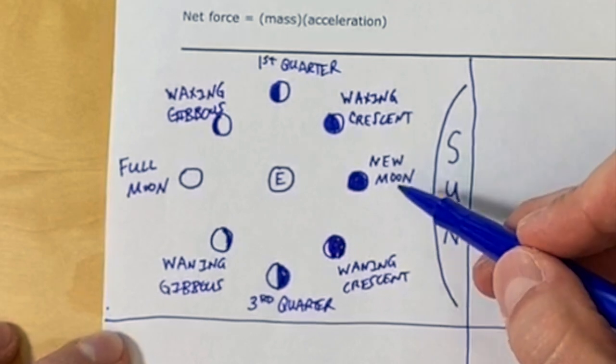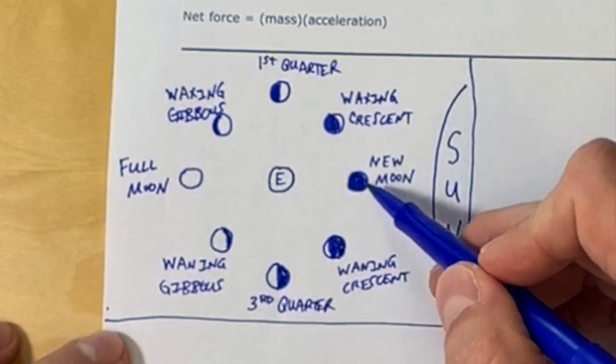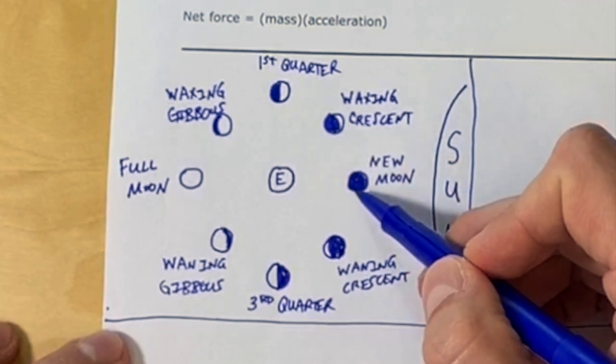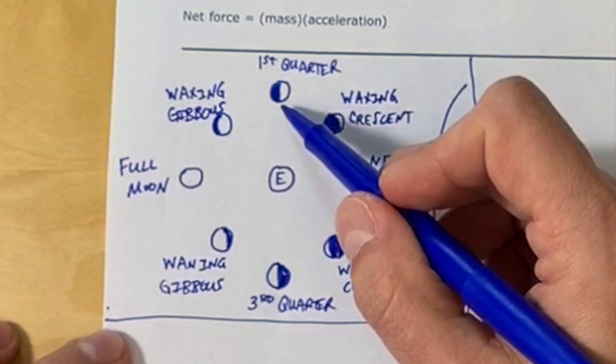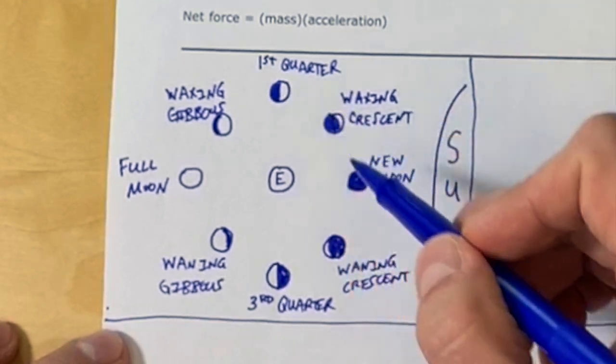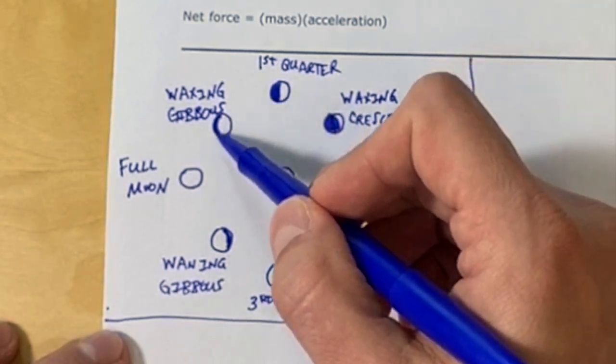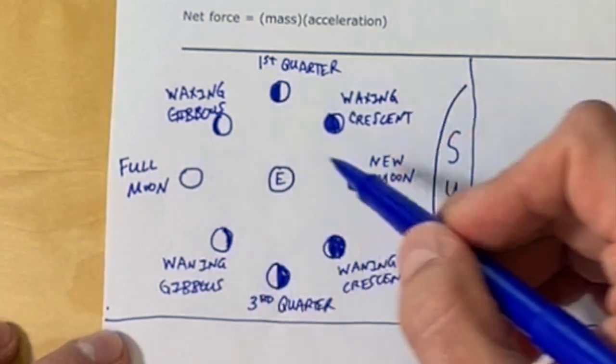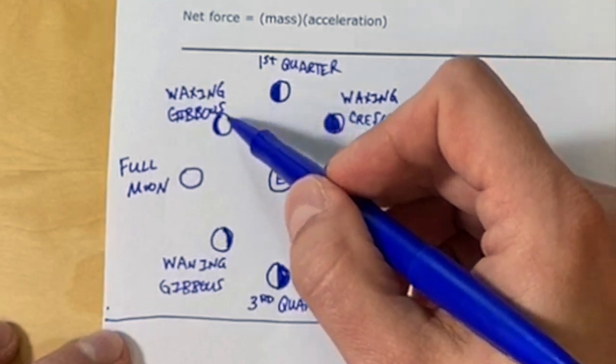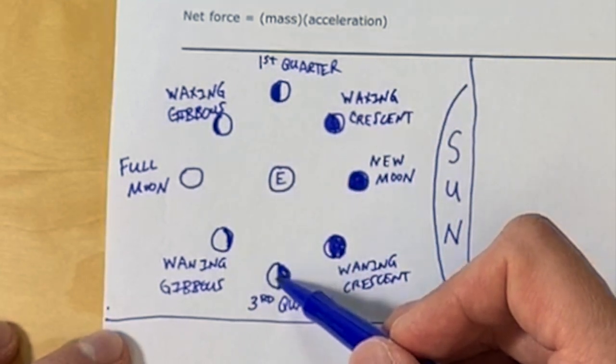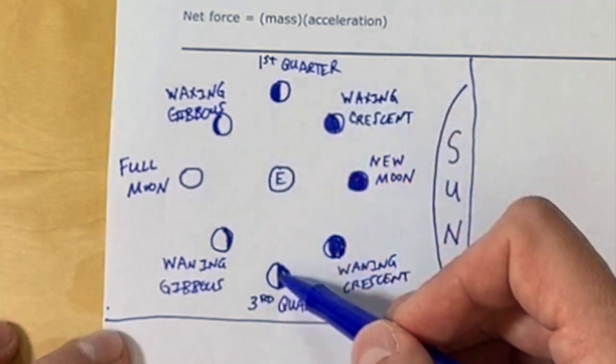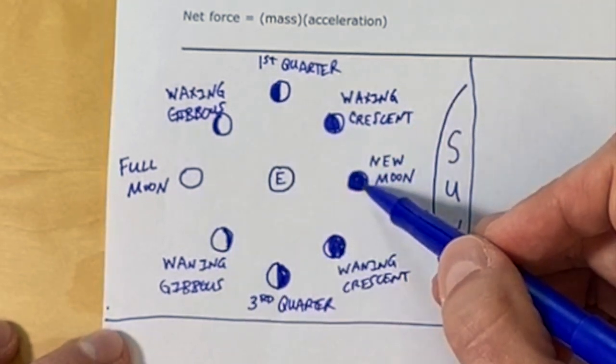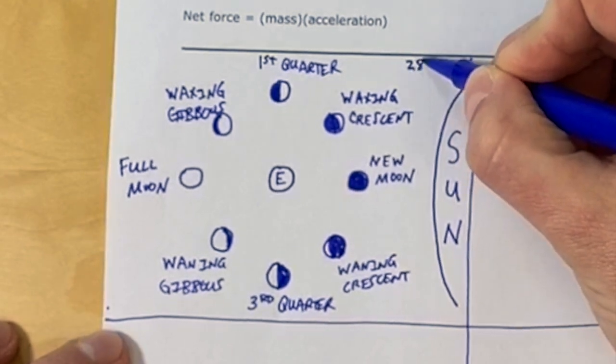Now, you're going to need to know the timing between each of these phases. Between the new moon and the waxing crescent is about three and a half days. Between the new moon and the first quarter, it's about one week or seven days. The new moon and the full moon is about two weeks. And the new moon all the way back around to the third quarter is about three weeks.